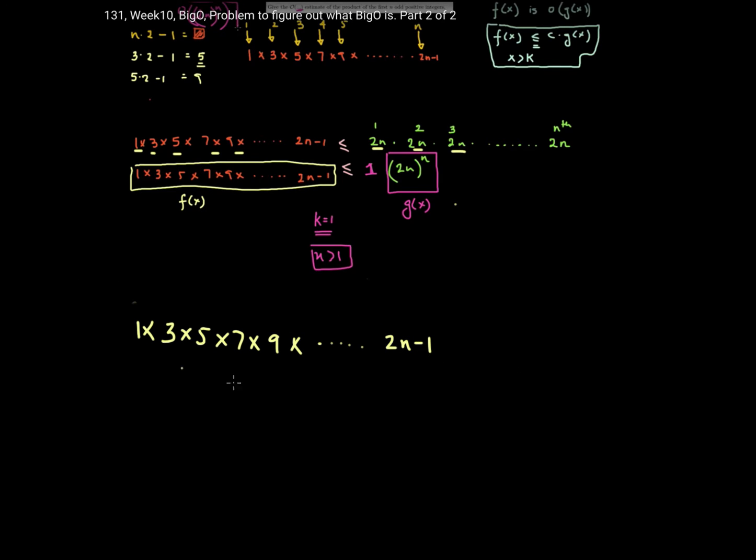Now what I can do is that this number, which is the multiplication of all these terms, will be less than or equal to if I were to multiply all the numbers irrespective of whether they are odd or even. So if I do 1 times 2 times 3 times 4 times 5, keep on doing this until you hit 2n minus 1.